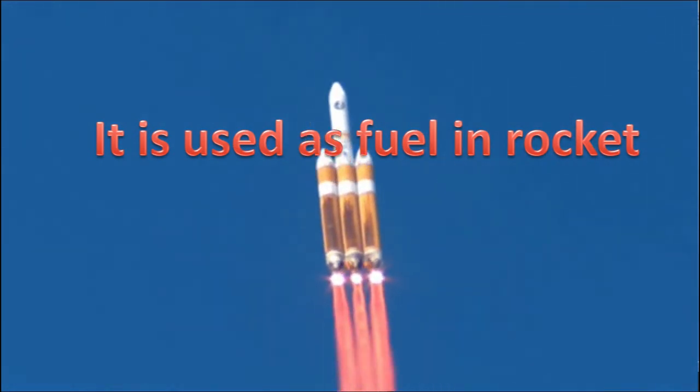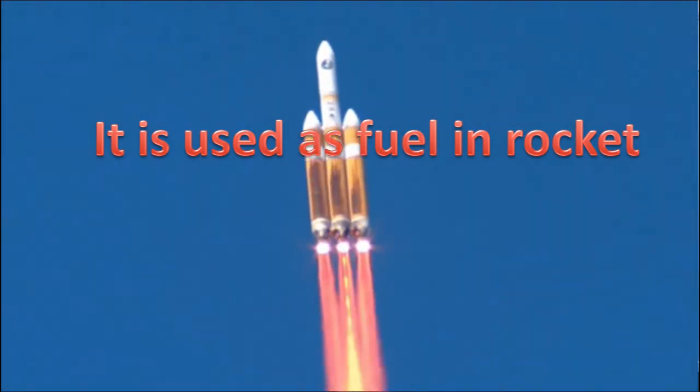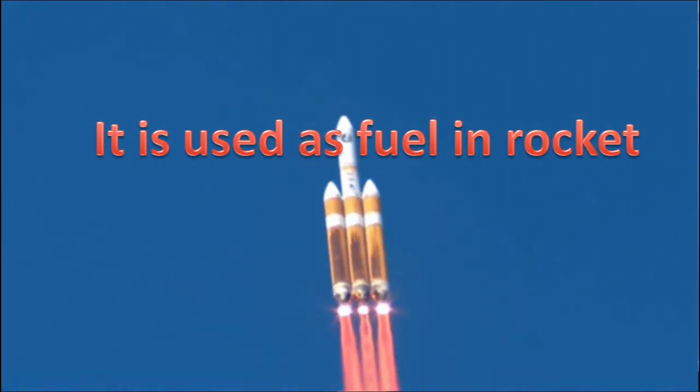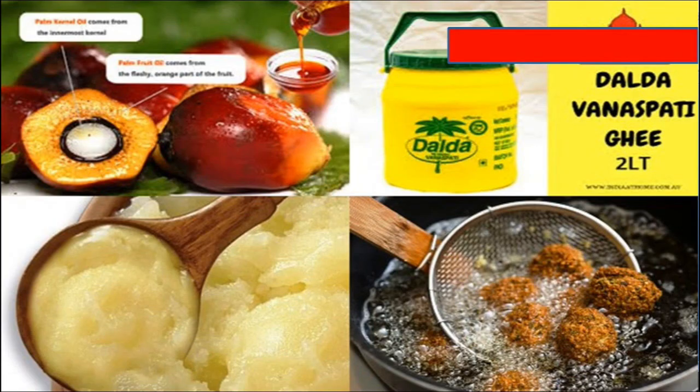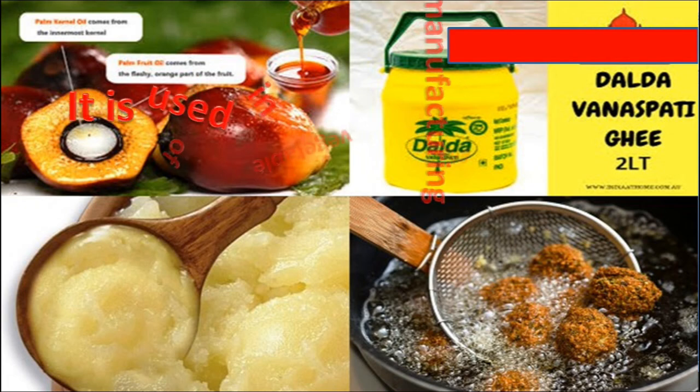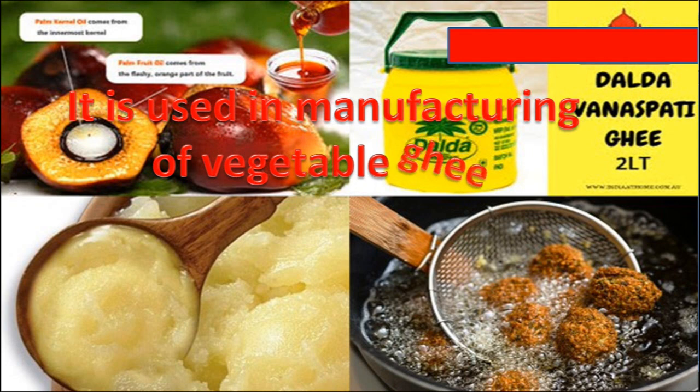Hydrogen gas is flammable in nature, hence it is used as a fuel in a rocket. Hydrogen gas passed through vegetable oil solidifies it. This chemical reaction is called hydrogenation, and hydrogen is used in manufacturing of vegetable oil or dalda.